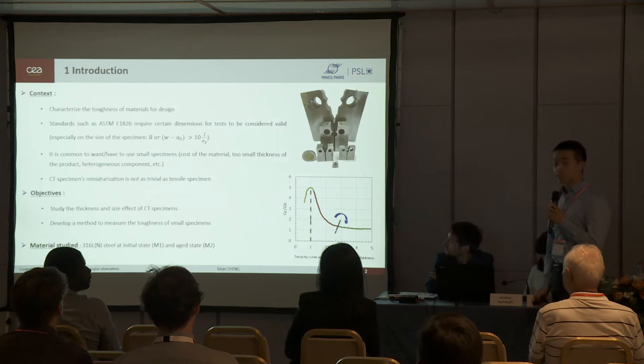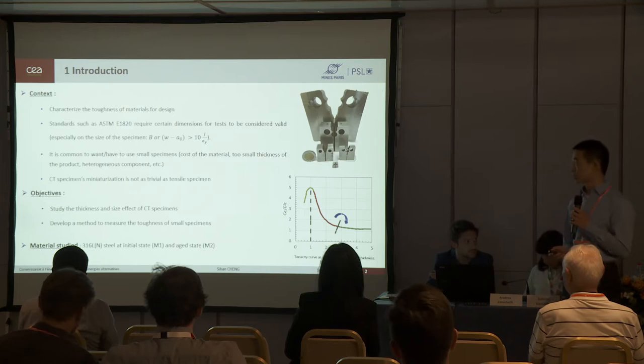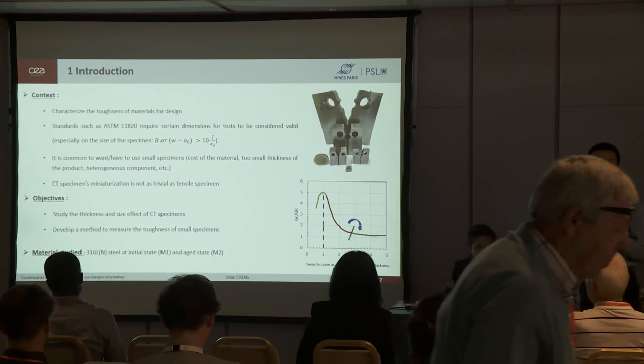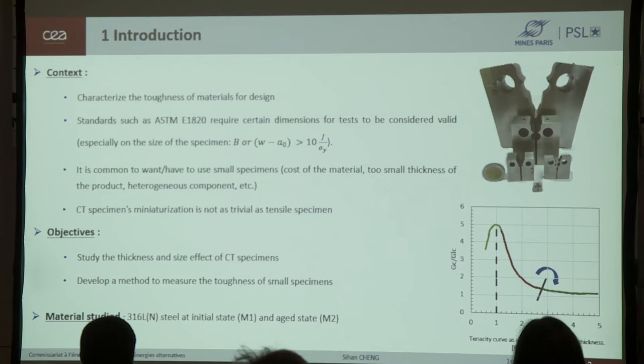This research consists in the characterizing of fracture toughness of material for design of structure. When we do some tests about fracture toughness, we have to follow some standards like ASTM or ISO. These standards define the test procedures and dimension of specimens. But in reality, we often want to use small specimens because of the presence of heterogeneity, thin products, etc. In particular, the small specimens is outside the valid domain of standards.